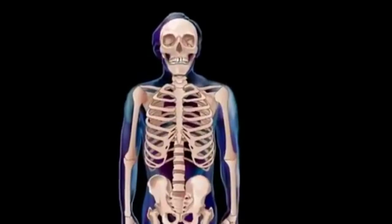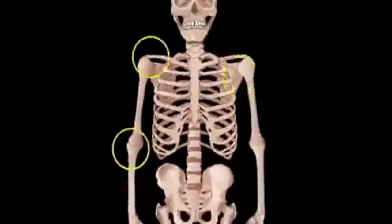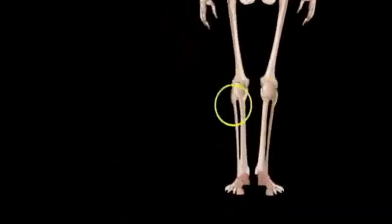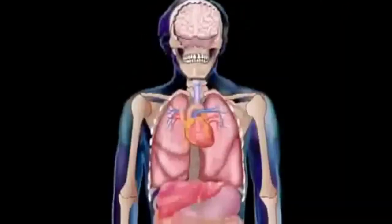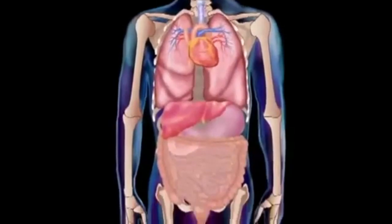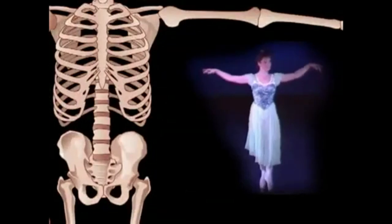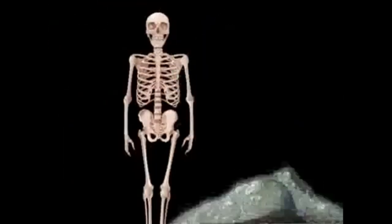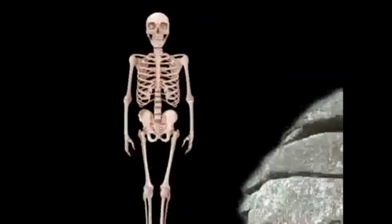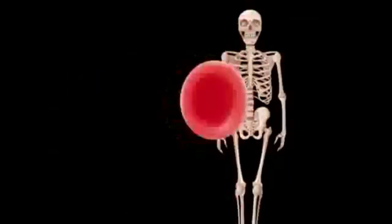The skeletal system includes all the bones of the body, plus the joints where they attach to each other. Our skeleton protects our internal organs, provides a framework or scaffolding that allows us to stand upright and move, stores minerals that our body needs to function properly, and produces blood cells.